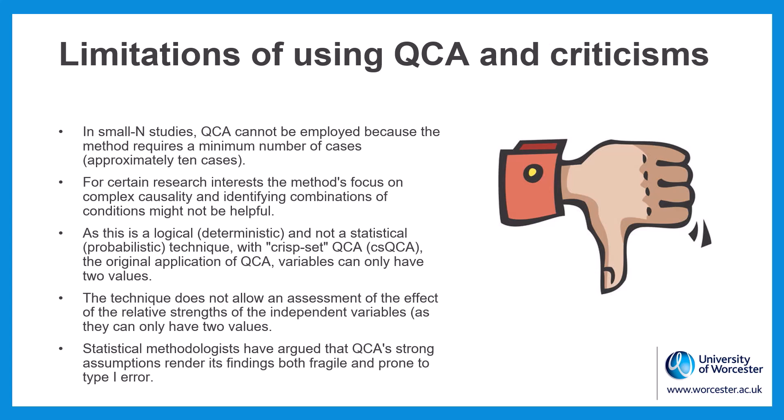With crisp set QCA, the original application of QCA, variables can only have two values: 0 and 1. The technique does not allow an assessment of the effect of the relative strength of the independent variables. Statistical methodologists have also argued that QCA's strong assumptions render its findings both fragile and prone to type 1 error.